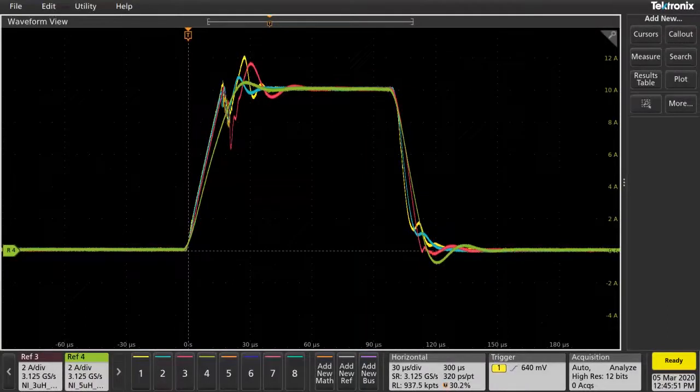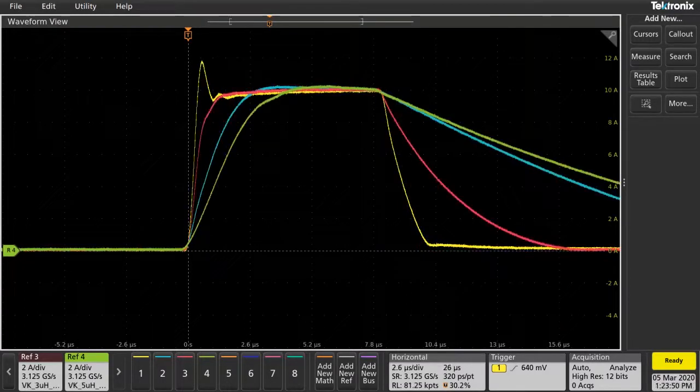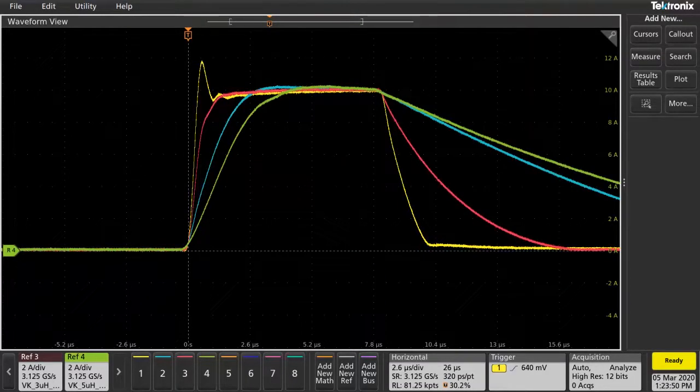Unfortunately, not all current pulsers and SMUs output high-quality pulses. Output pulses can have overshoot and long rise and fall times, all of which could result in poor measurements and potential device damage.